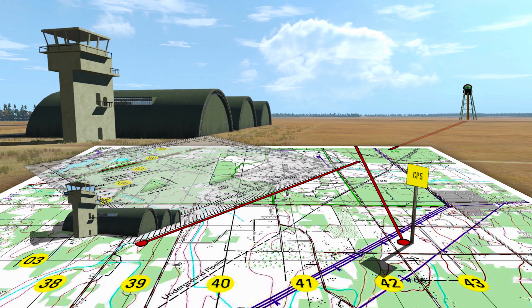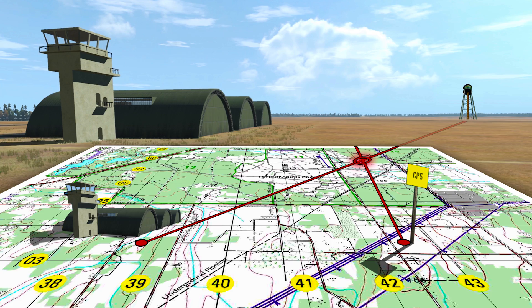Identify the point where the lines intersect as the unknown location. Determine the grid coordinates to the location to the desired accuracy.